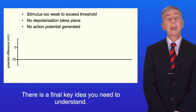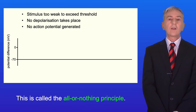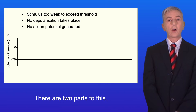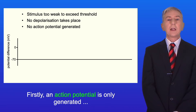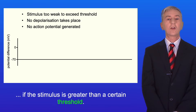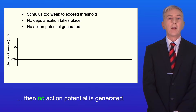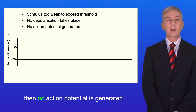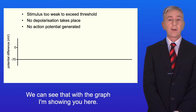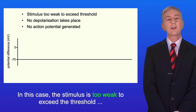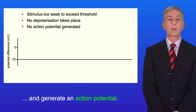There is a final key idea you need to understand: the all-or-nothing principle, which has two parts. Firstly, an action potential is only generated if the stimulus is greater than a certain threshold. If the stimulus is below the threshold, then no action potential is generated, as shown in this graph — the stimulus is too weak to exceed the threshold and generate an action potential.